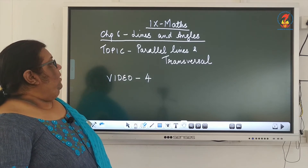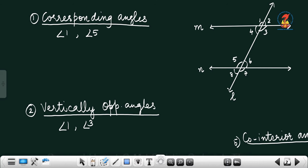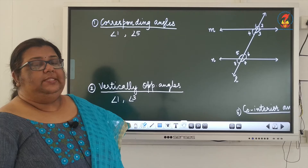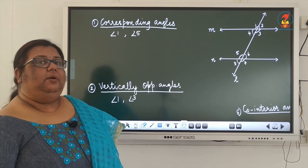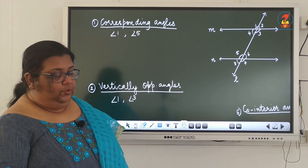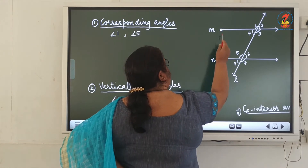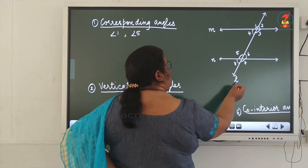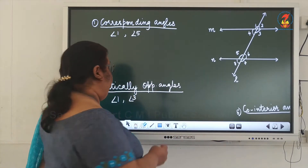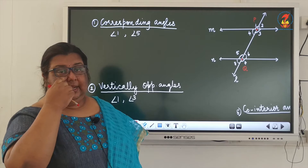We'll continue with the topic of lines and angles. A new topic is parallel lines and transversal. These are concepts you have learned in your smaller classes. We will just recall what is meant by a transversal. A straight line which cuts two or more straight lines at distinct points is called a transversal. In this figure, you can see there are two lines m and n, cut by a third line l at two points P and Q. The line l is known as a transversal.